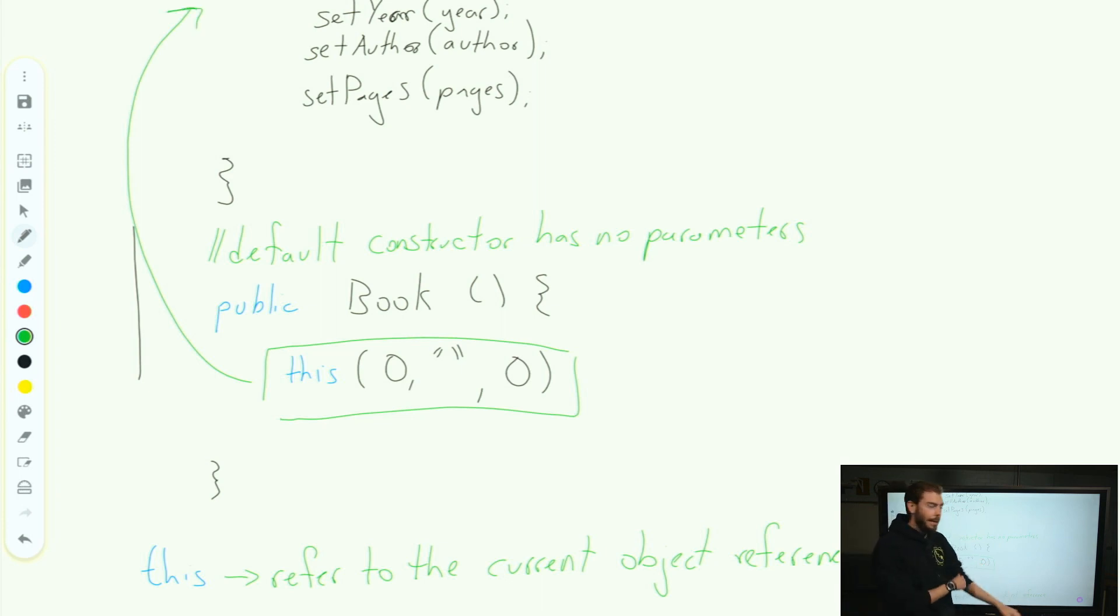So this keyword will then call this constructor up here, because the parameter list matches the constructor up here. And I can actually have a chain of these. Maybe I have a parameter list with just two and a parameter list with five. And I can keep calling the this inside of successive constructors to build and layer in all of the information, making sure that I have everything that I need without having to repeat myself by calling my setters and getters.